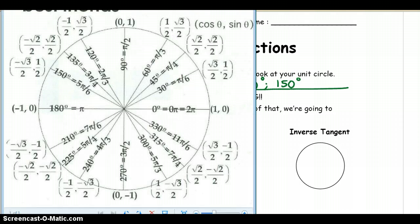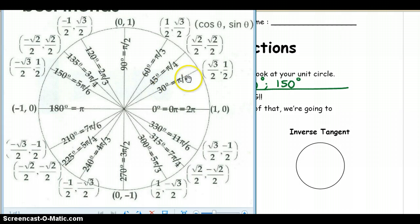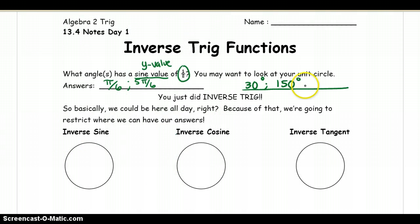Going around the circle to see if there are any other ones — these are negative, that doesn't work; these are negative, so that doesn't work. Therefore those are the two. But the funny thing is I can name 30 degrees as negative 330 degrees or negative 11π over 6, so I can even say this is negative 330 degrees at that spot or negative 11π over 6.